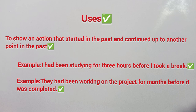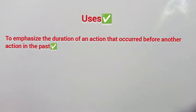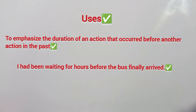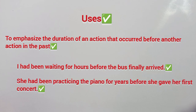The second use of Past Perfect Continuous Tense is to emphasize the duration of an action that occurred before another action in the past. For example: 'I had been waiting for hours before the boss arrived.' The boss arrived — that is the second action; the waiting continued before that. Another example: 'She had been practicing the piano for years before she gave her first concert.' She was practicing the piano, and then the first concert occurred.